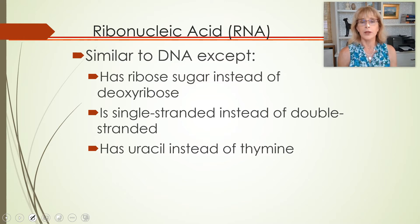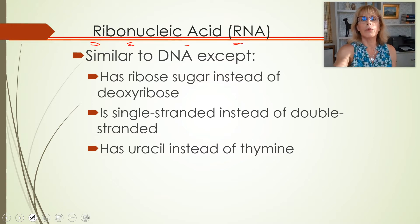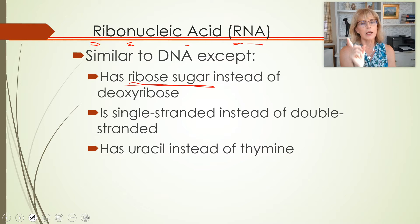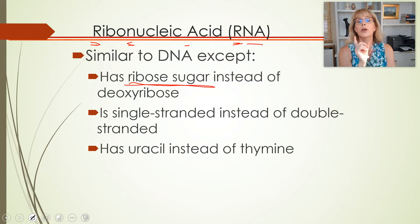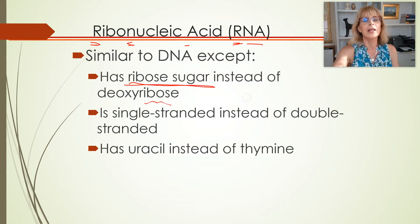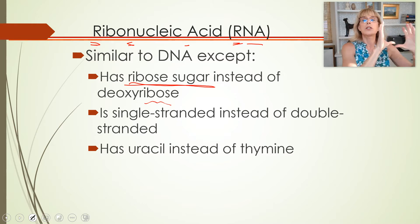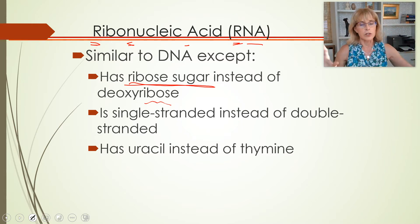So ribonucleic acid — that is RNA, ribonucleic acid — is similar to DNA except it has ribose as its sugar. If I ask you if there is ribose in DNA, you will say no, there is not ribose in DNA. There is deoxyribose in DNA. Ribose is one sugar. Deoxyribose is a different sugar. They are different.